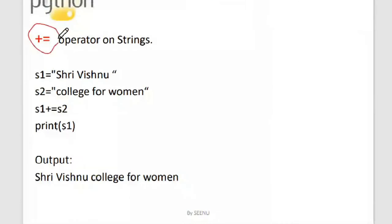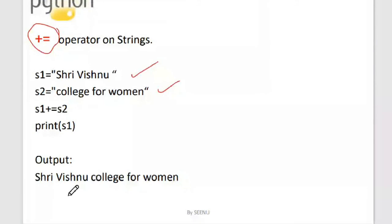In-place operators also work on strings. Here s1 is 'Sri Vishnu' and s2 is 'College for Women'. Saying s1 += s2 means s1 = s1 + s2. Don't forget the immutable concept — it won't change 'Sri Vishnu' directly; it creates a new object 'Sri Vishnu College for Women' and reassigns s1 to that new string. The original strings still remain in the string pool.